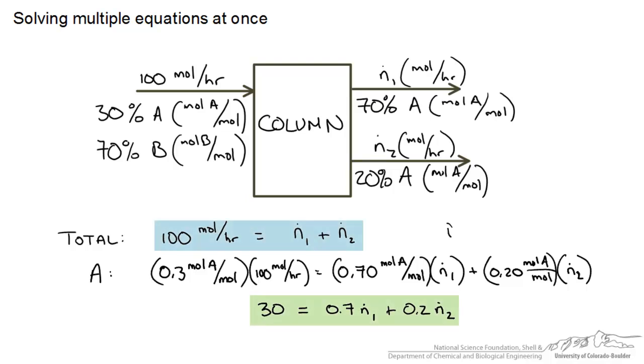So now we have two equations, one designated here, two designated here, and two unknowns. So how do we solve for our two unknowns using these two equations?